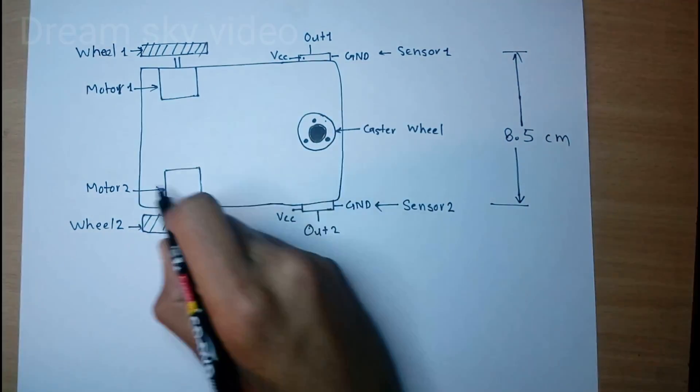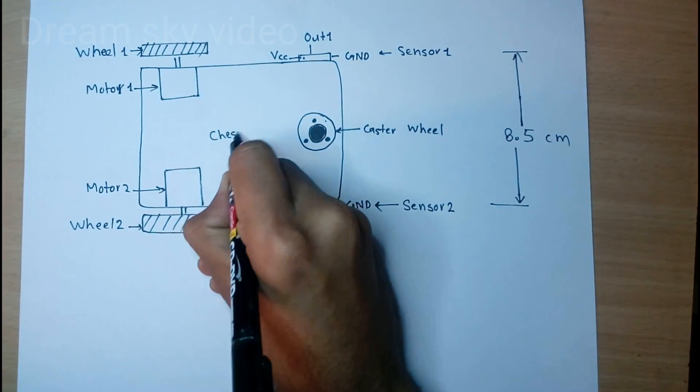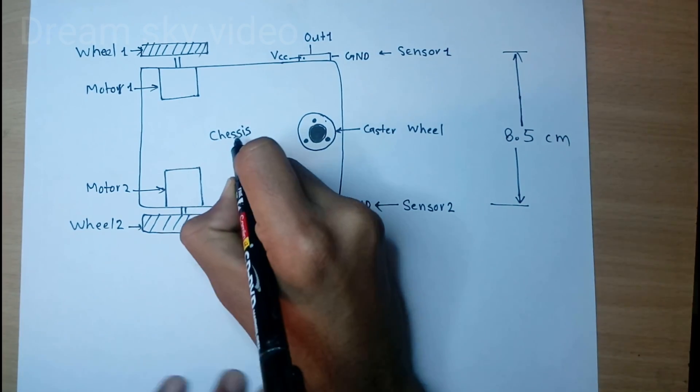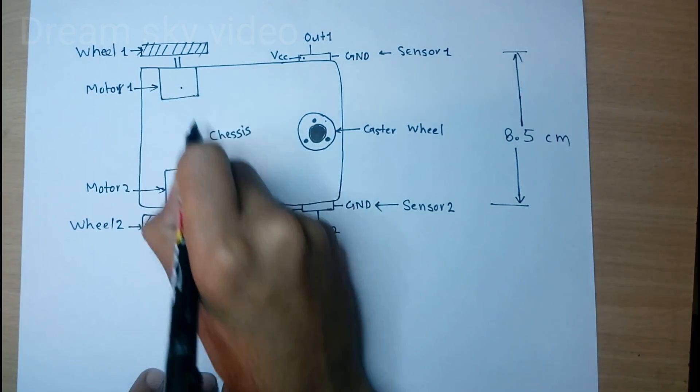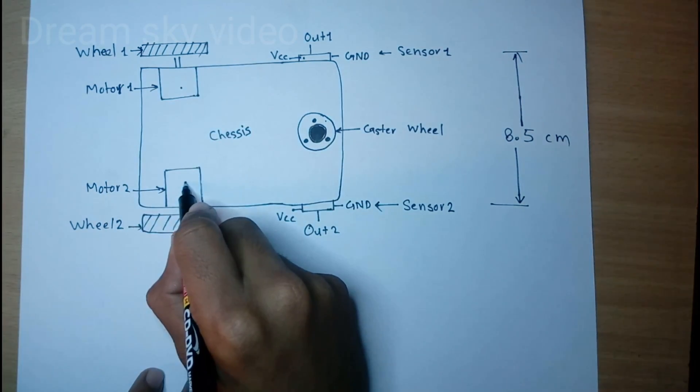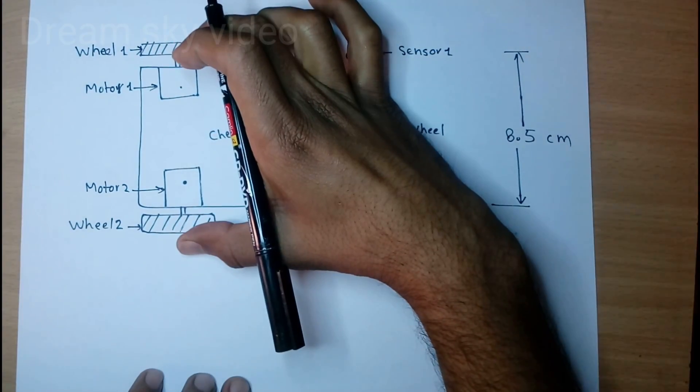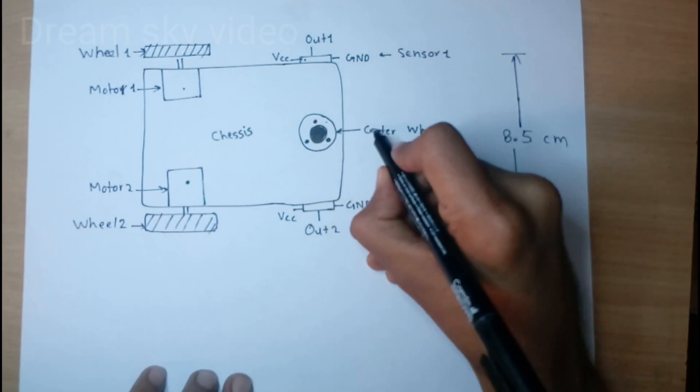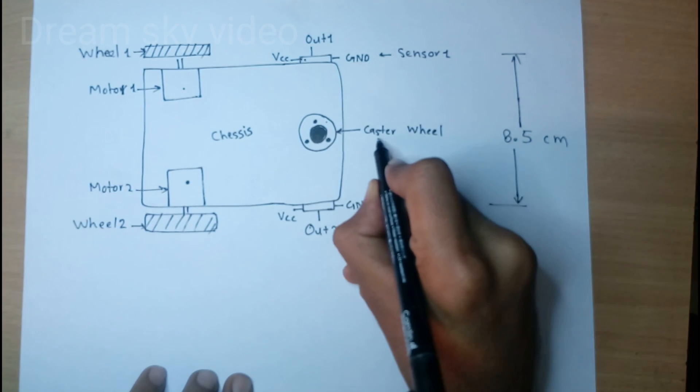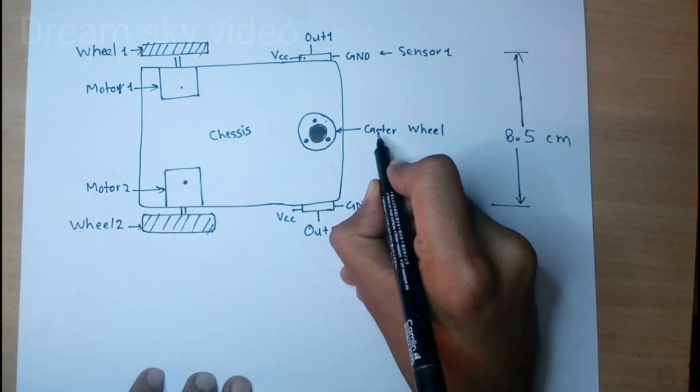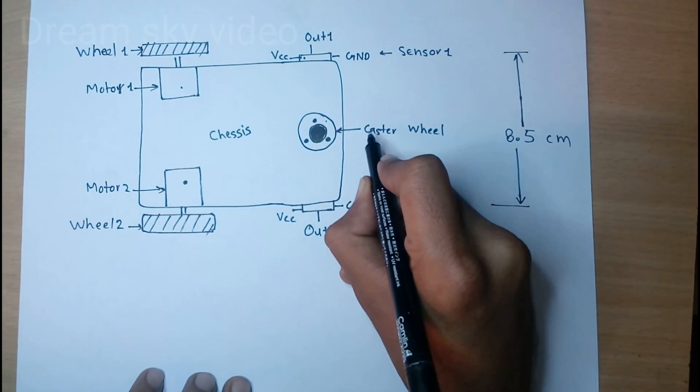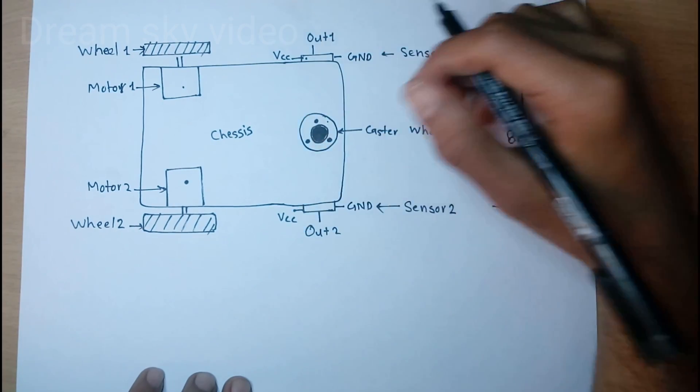This is our chassis. Here motor one is connected and here motor two is connected. Two wheels are also connected to motor and here a caster wheel is connected. We need not to use motor in both sides so we use a caster wheel.